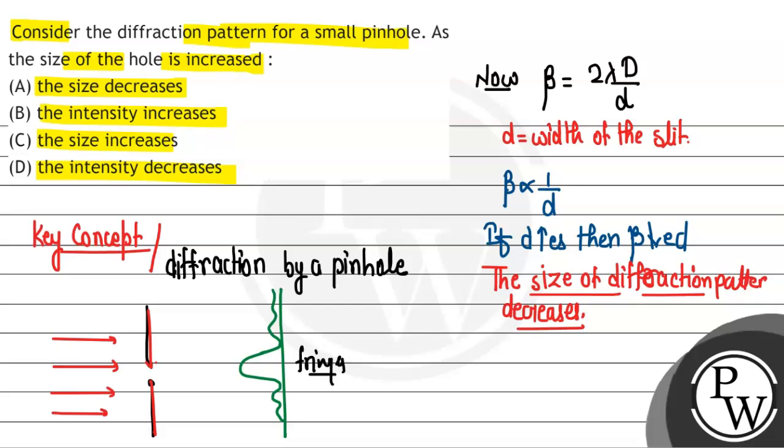Now, if the size of the diffraction pattern decreases, its area will also reduce. And if area reduces, then the intensity formula - intensity is power upon area.